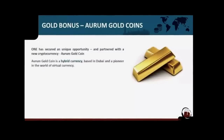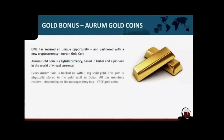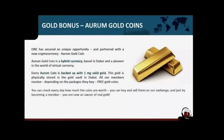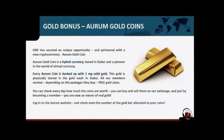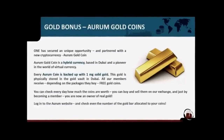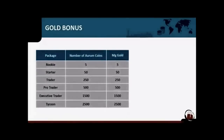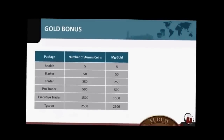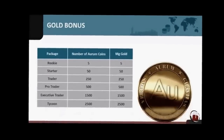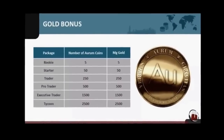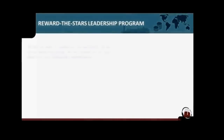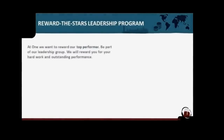One has partnered up with a new type of cryptocurrency — a so-called hybrid currency — the first on the market to back up the currency with solid gold. As a bonus, you collect Aurum gold coins. Each coin is backed up with one milligram of solid gold, and these coins you receive for free as a member of One.